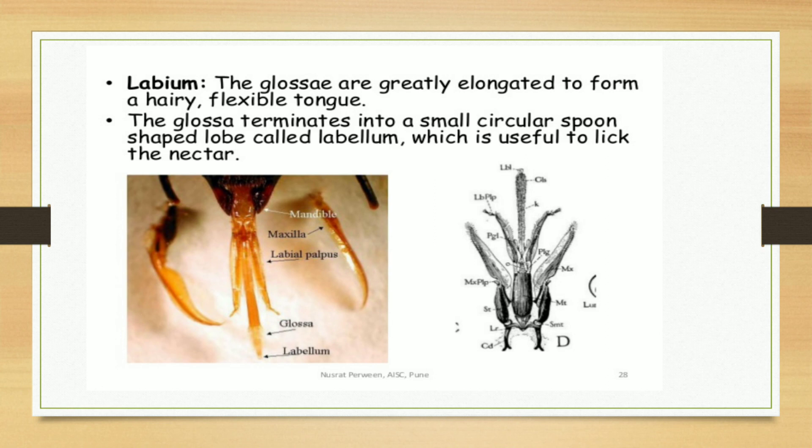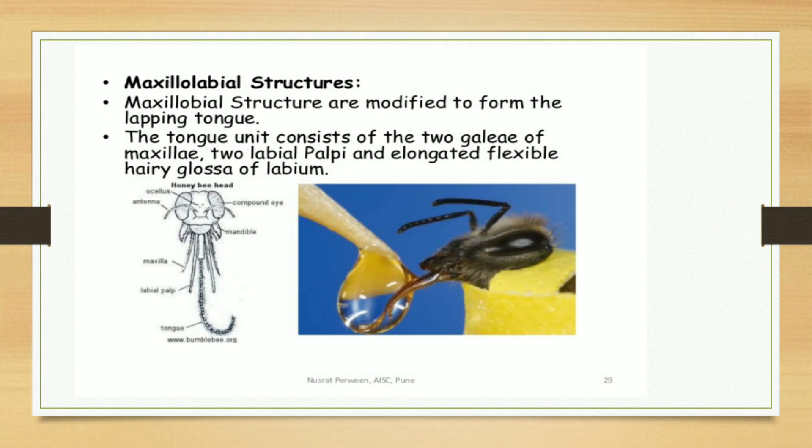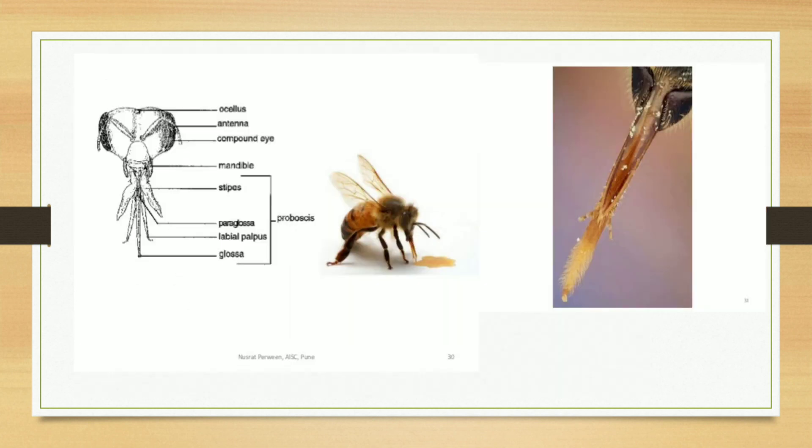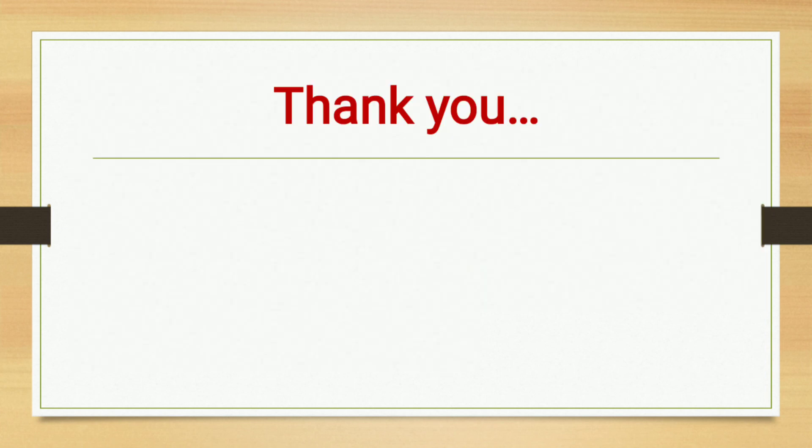Maxillolabial structures: these structures are modified to form the lapping tongue. The tongue consists of two galeae of maxillae, two labial palps, and an elongated, flexible, hairy glossa of labium. These are the mouthparts of honeybee. Thank you.